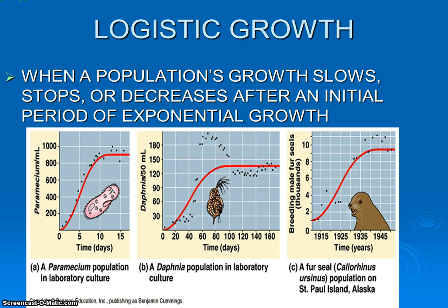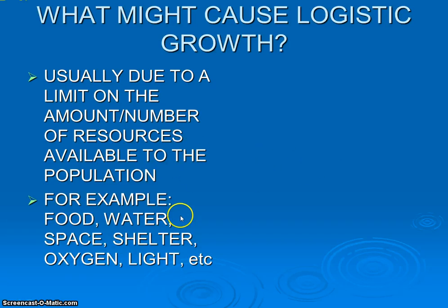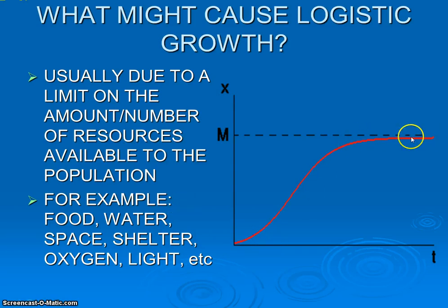The answer is actually really easy: logistic growth ultimately comes down to one idea — resources. Resource availability: how much food is available, water, space, a place to live, oxygen, light — depending on what the organism actually needs. No matter what, it's the resources that cause this general leveling off, and that is logistic growth.